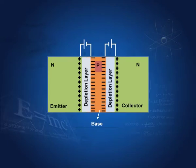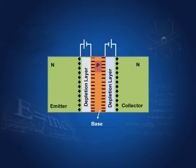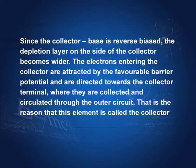Since the collector-base junction is reverse biased, the depletion layer on the side of the collector becomes wider, while the depletion layer on the forward-biased emitter side is thinner. The electrons entering the collector are attracted by the favorable barrier potential and are directed towards the collector terminal, where they are collected and circulated through the outer circuit — this is why this element is called a collector.